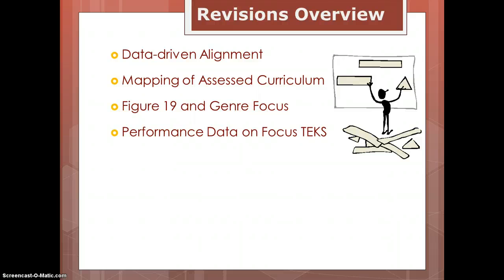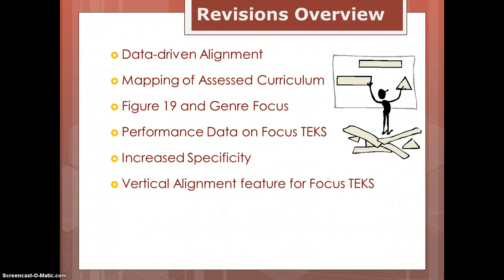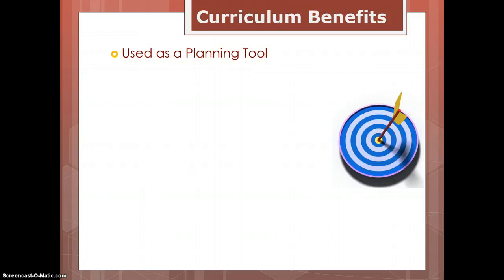We included a feature that allows teachers to see previous data on specific standards taught in each unit. We also provided increased specificity. The vertical alignment feature for focus TEKS gives us an idea about where students were and where they are headed with a specific skill. We also provided STAR stems. Some benefits of these changes relate to how we can rely on and use the documents as a planning tool, and we were able to provide further clarification with ambiguous TEKS and process standards.